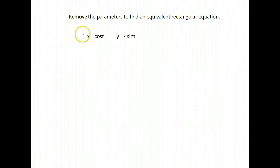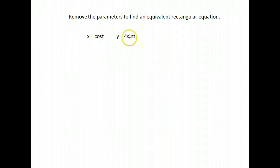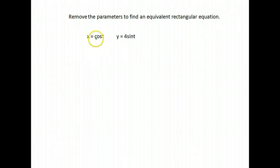Here I have a little bit different view. I have a parametric equation again that I want to write in rectangular form, which means I need to remove this parameter t. But notice I have cosines and sines. And if I tried to solve one of these equations for t, I would have to use the inverse, which makes it pretty ugly.